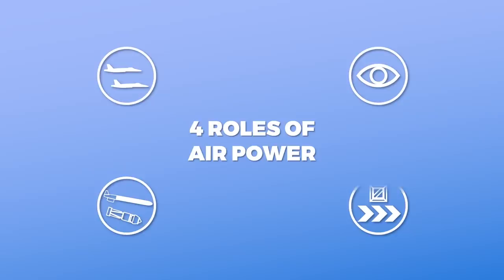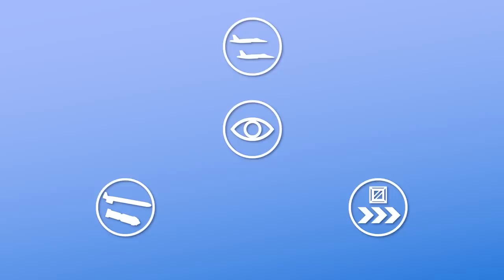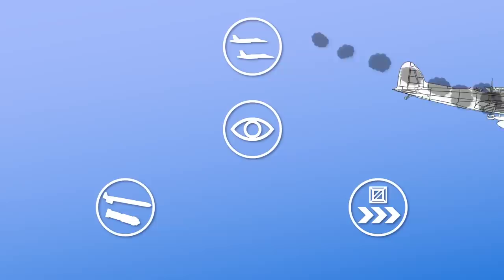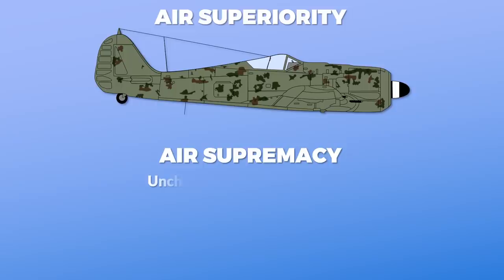Control of the air is the prerequisite for the three other roles, since without a certain level of control of the airspace, the other roles can't be performed — which is a nice way of saying your aircraft get shot down. When we think about control of the air, we usually think about air superiority, or even air supremacy, which is the unchallenged control of the air.